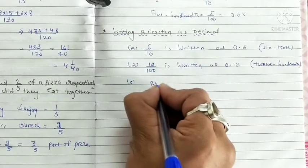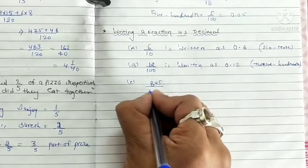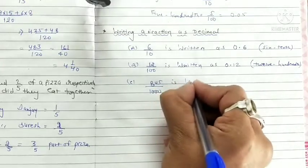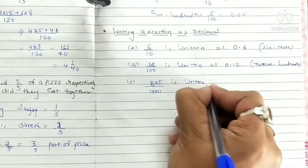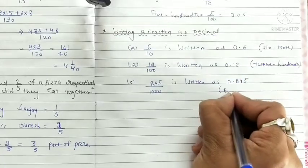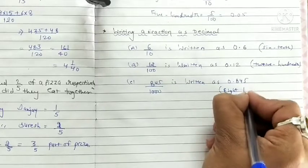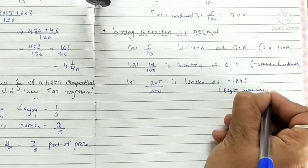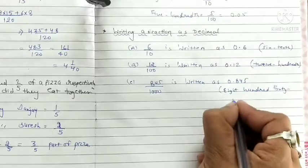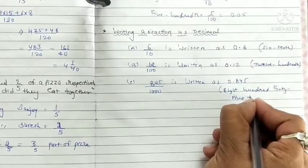Eight hundred forty five upon thousand is written as 0.845.